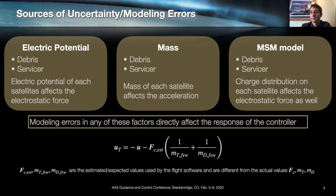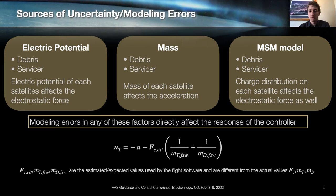We also have sensitivity to mass modeling errors — if we don't know the mass of the servicer or the debris exactly, that will also affect the control response. And last but not least, we have MSM model errors or inaccuracies, which we will investigate using low and higher fidelity MSM models. Not all these modeling errors will directly affect the controller response because they are part of that feedforward term. Prior work only considered the electric potential error of the debris satellite, so in this presentation we compare how potential estimation errors compare to other sources of uncertainty such as mass errors or MSM modeling errors.